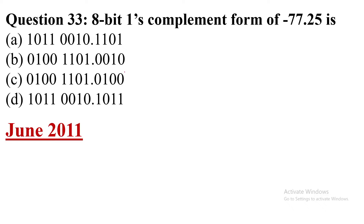Hi everyone. In this video I am going to share with you a UGC NET exam previous year question. This question was asked in June 2011 — it is question number 33. The question is: find the 8-bit one's complement form of minus seventy-seven point two five.